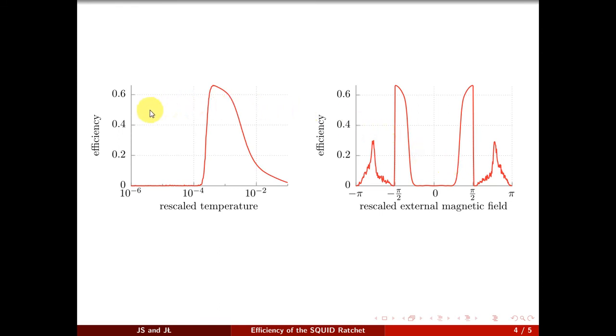We explore a space of the system parameters to reveal the set when the rectification efficiency is globally maximal.